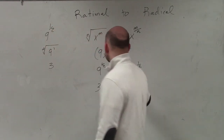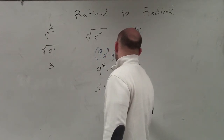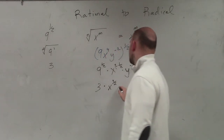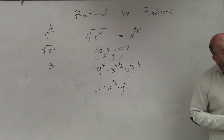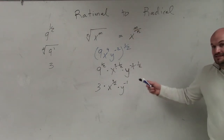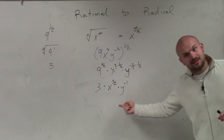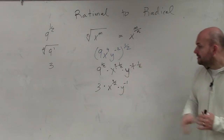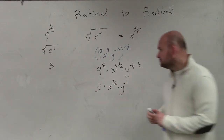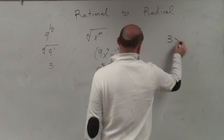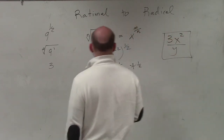That then turns into x to the 4 over 2, which, yes, I will simplify in just a second. And this becomes times y to the negative first power. Since we have y to the negative first power, to make this positive we have to put it in the denominator. And then this simplifies to x squared. So my final answer is going to be 3x squared over y.